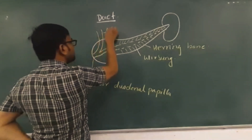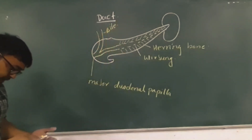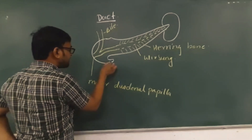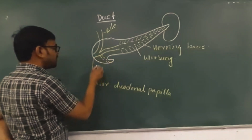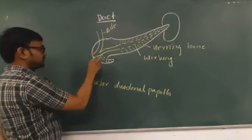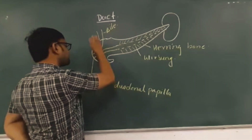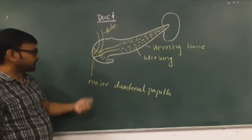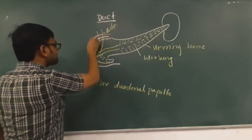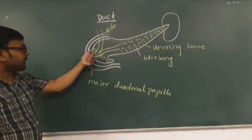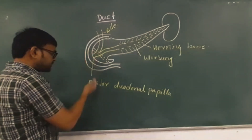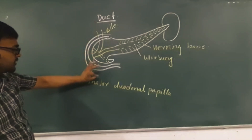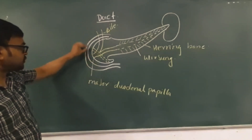This is the main duct of the pancreas and this is the bile duct. Second is the accessory duct of Santorini. The accessory duct of Santorini starts from the inferior border of the body of the pancreas and crosses the main duct, opening into the duodenum above the major duodenal papilla — this opening is the minor duodenal papilla. The major duodenal papilla lies 8 cm below the stomach, and the accessory duct of Santorini lies 6 to 8 cm from the stomach.